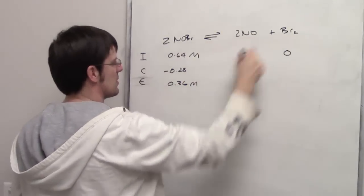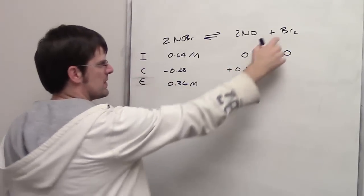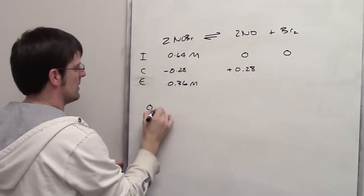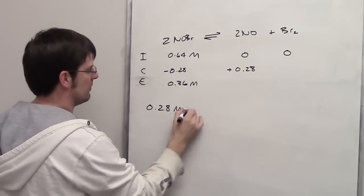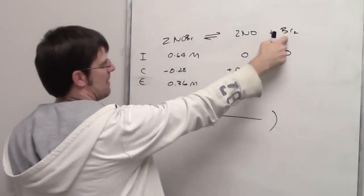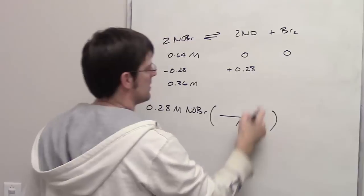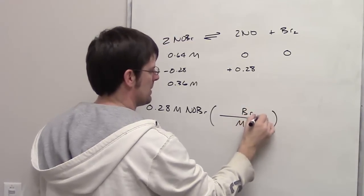The difference is that this is on the product side, so it's going to be plus 0.28. What about this one, though? Well, I'll go ahead and write down that I've got 0.28 molar equivalents of NOBr. How many molar equivalents am I going to have of Br2? I'll put molar equivalents of NOBr in the denominator and molar equivalents of Br2.